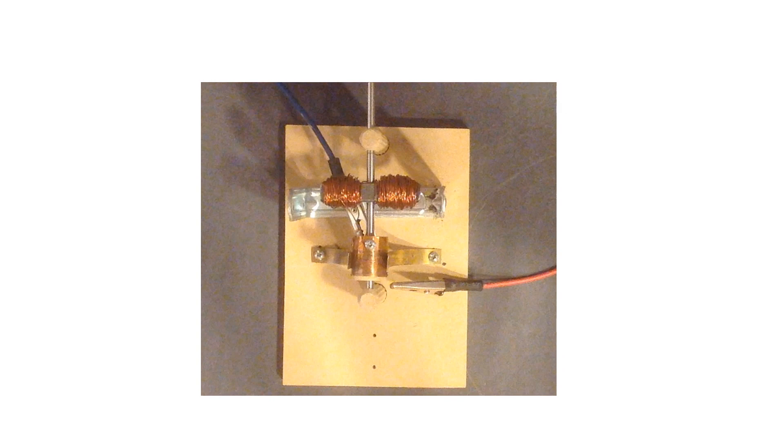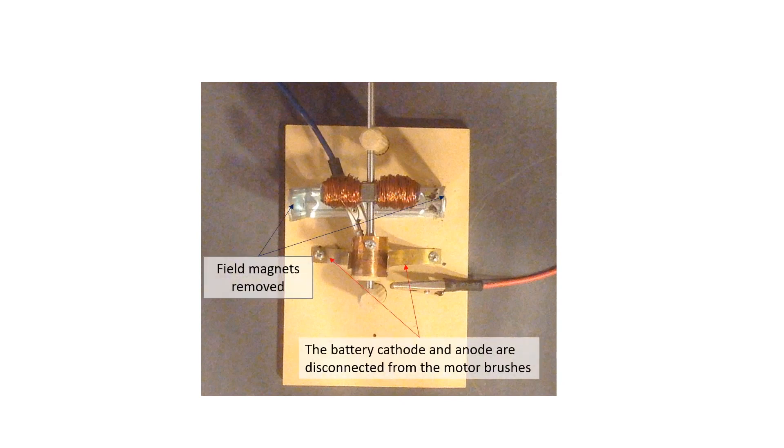Let's observe the effects of this electrically induced magnet using our iron filing index card trick. First, notice that I've removed the stationary magnets from the motor, and that neither of my battery leads are attached to the motor brushes such that there's no flow of current through the rotor. Now, if I place my card and iron filings on the motor with the leads disconnected, you can see that there's no magnetic field associated with the rotor.